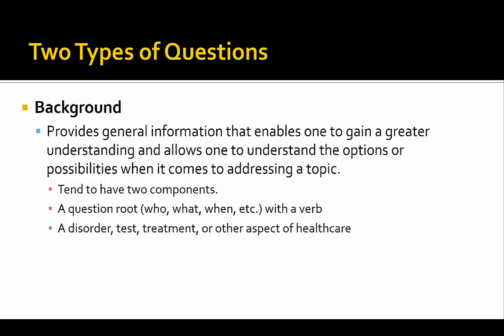When it comes to evidence-based practice, there are two types of questions you tend to ask. The one you tend to begin with is called a background question. A background question allows you to determine what options you have out there. It tends to be more broad-based and tends to start with words like who, what, or when, combined with some sort of verb.